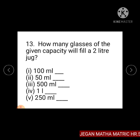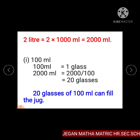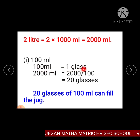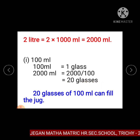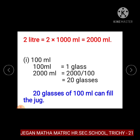Question number 13. How many glasses of the given capacity will fill a 2 litre jug? Subdivision 1: 100 ml. We know 2 litres equals 2000 ml. 100 ml is equal to 1 glass. Therefore, 2000 ml divided by 100 gives 20 glasses. So, 20 glasses of 100 ml can fill the 2 litre jug.